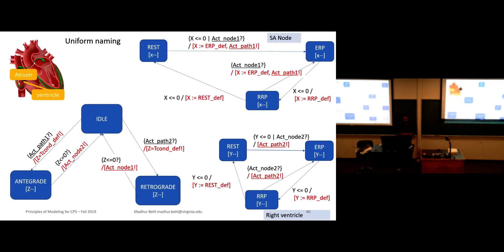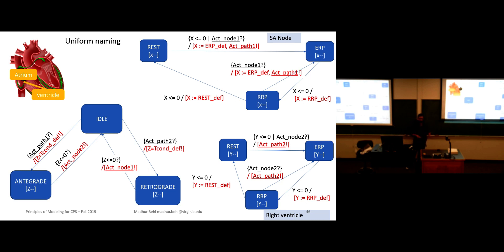This is where we ended our discussion, so let's have a quick recap. What we have is a node automaton — this is our SA node. We spent a lot of time discussing that not everything can be called a depolarizing message, because it creates problems of instantaneous activations in the atria and ventricle. In normal sinus rhythm, we want the SA node to expire its rest period first, transition to ERP, and then issue a message called 'activate path one,' which the path automaton is listening to.